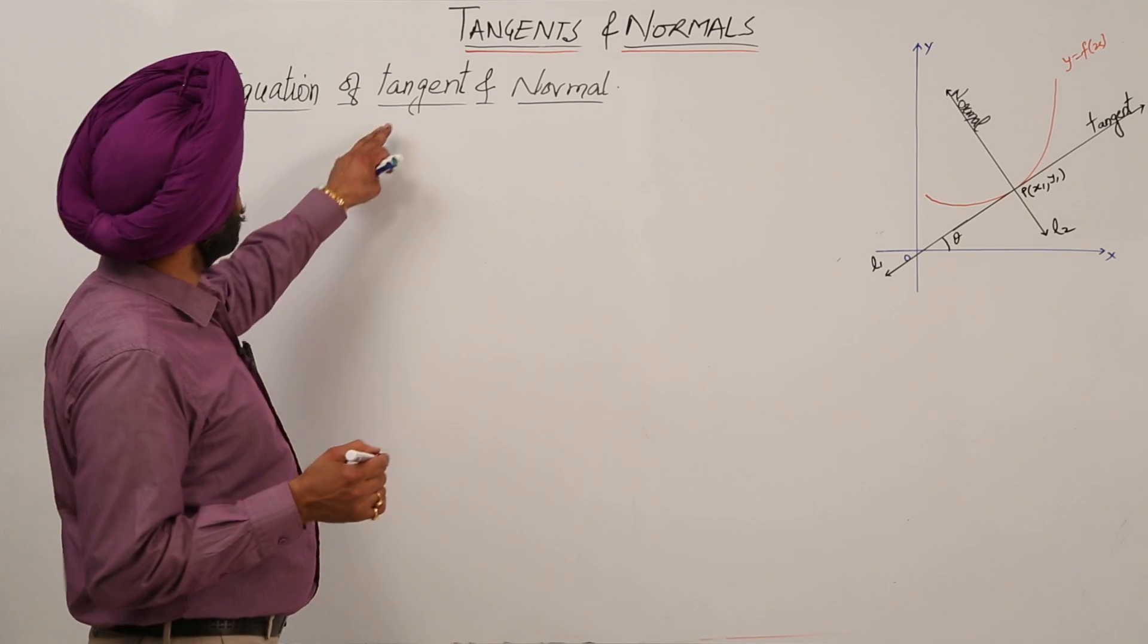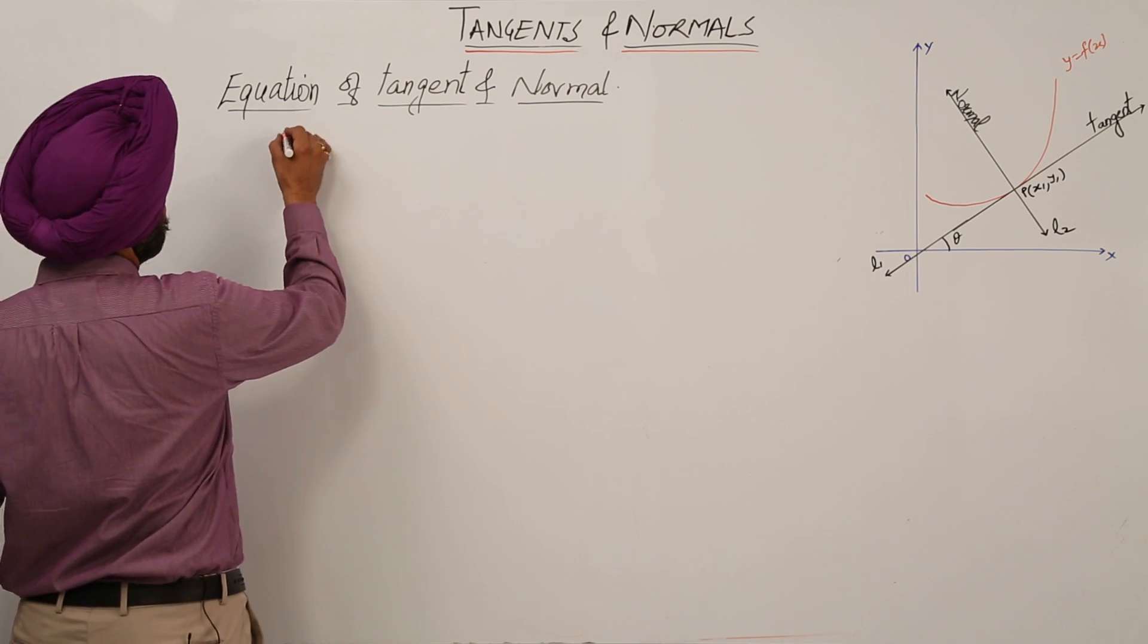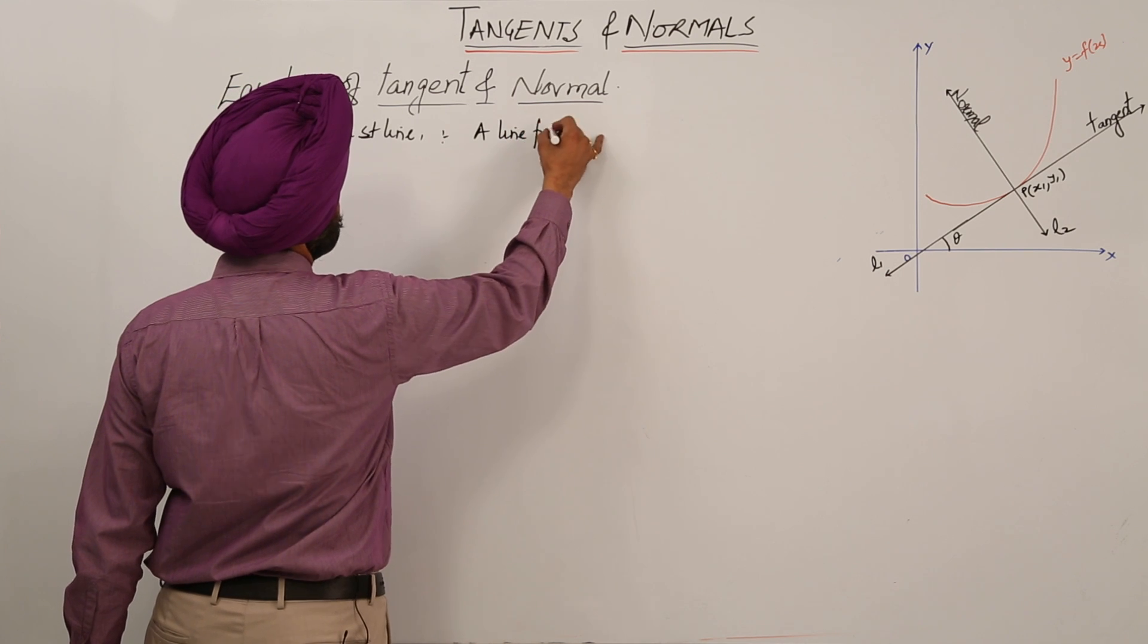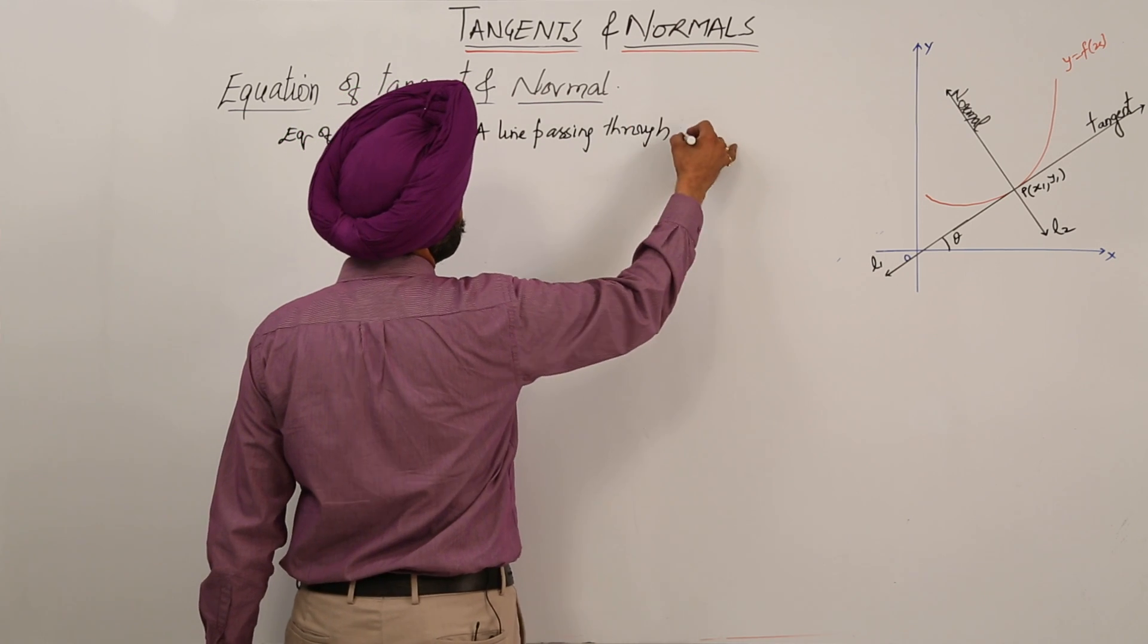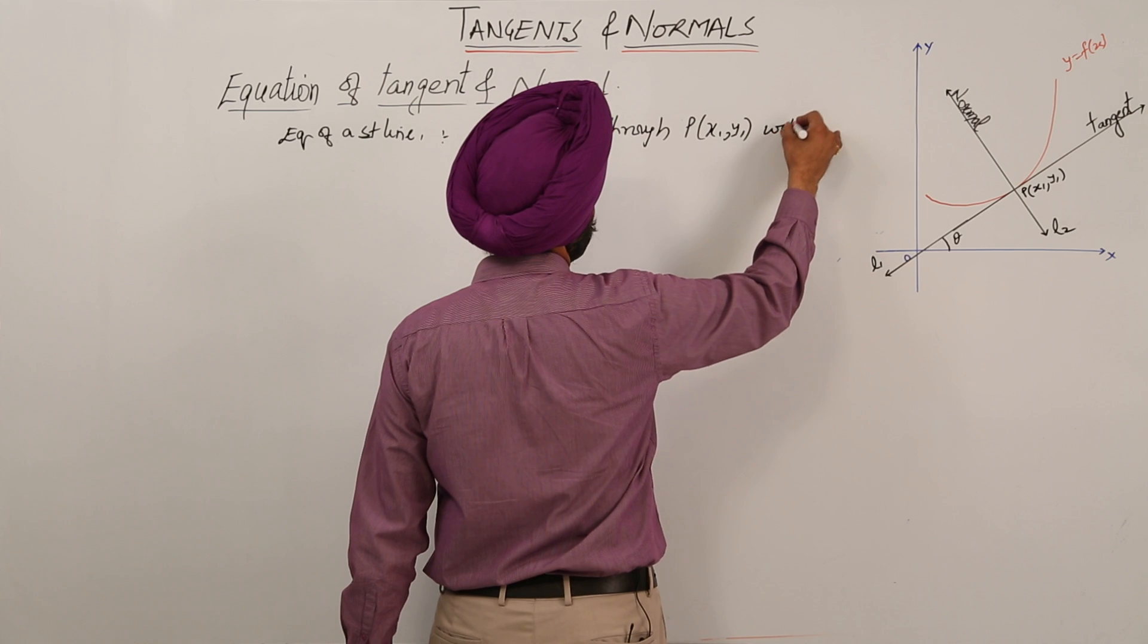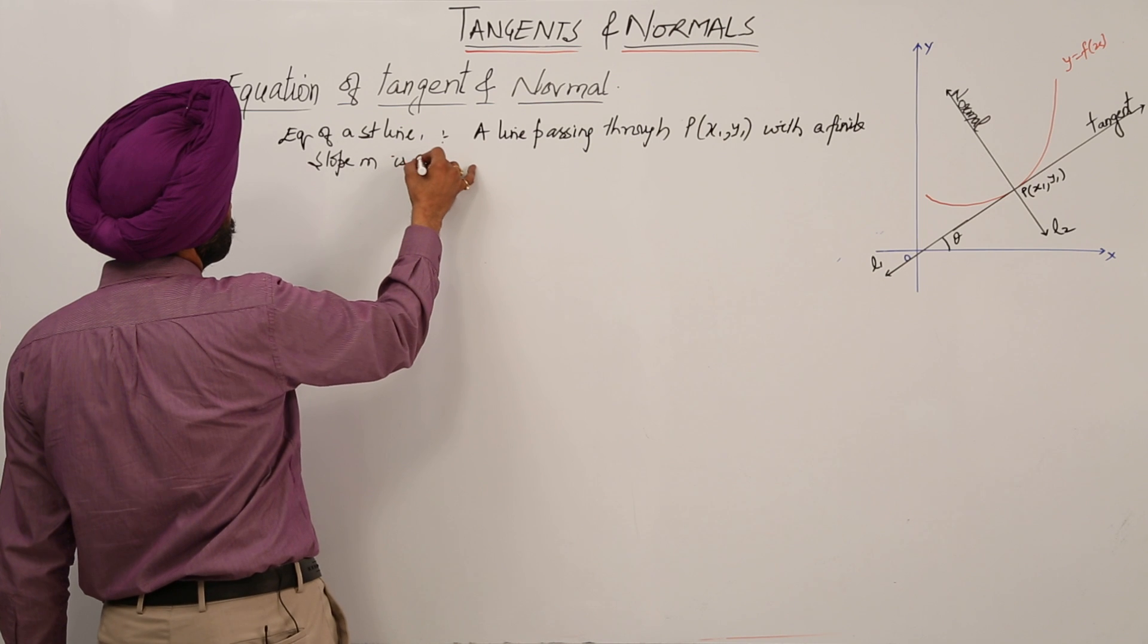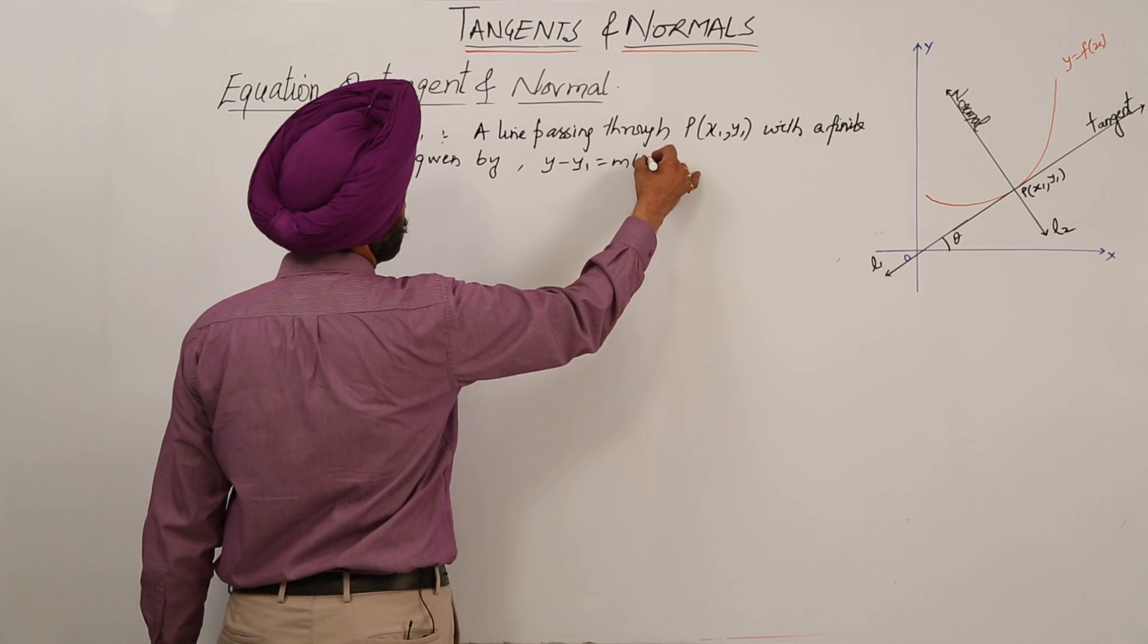Moving forward with the equation of tangents and normals. We already know what the equation for a straight line is. Equation of a straight line: a line passing through P(X1, Y1) with a finite slope M is given by Y - Y1 equals M times (X - X1).